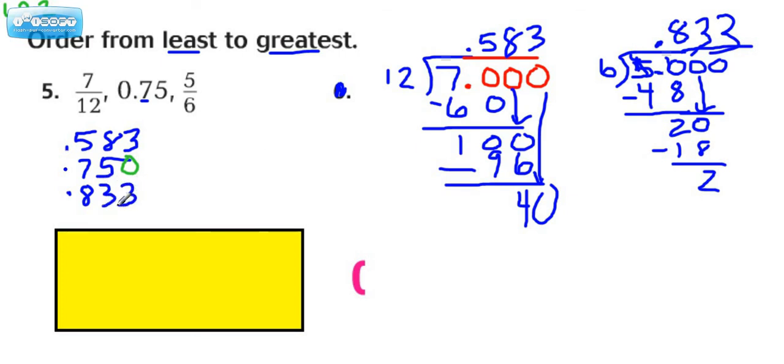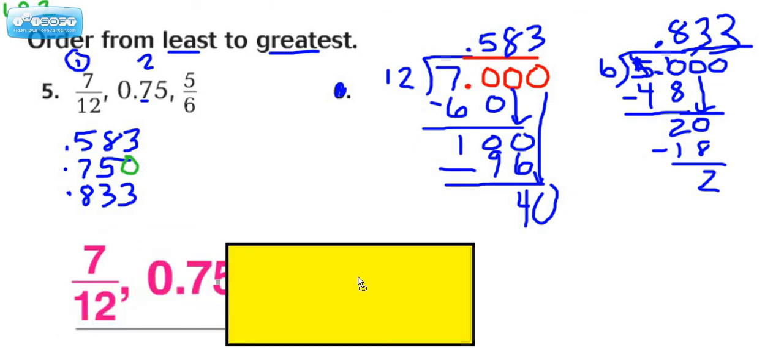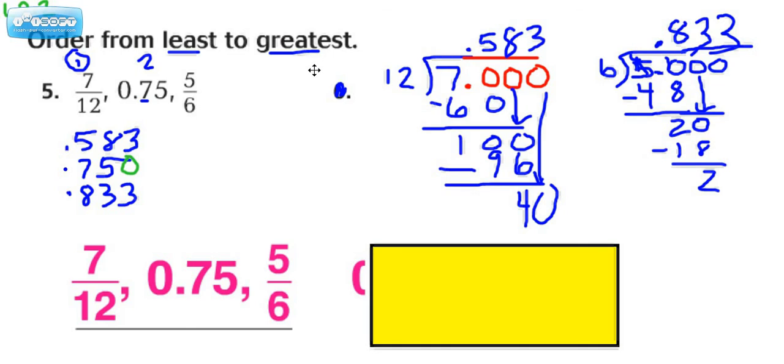Now let's compare, because we have enough information just looking at the tenths place to put them in order from least to greatest. You always want to pay attention to the directions. The tenths place value that's the lowest is this one right here, and that went with 7/12. So this comes first. The next lowest value is this one, so that comes second. And this one has the highest value. Just coincidentally, they happen to already be in the correct order from least to greatest.